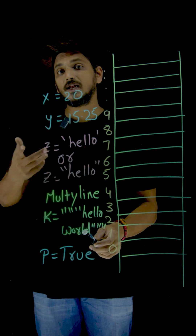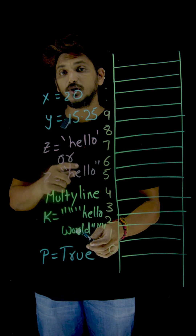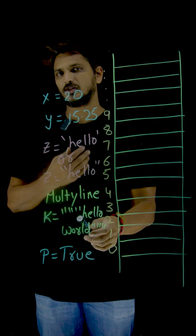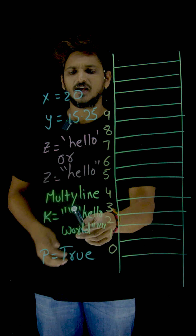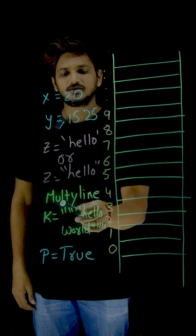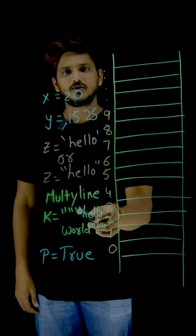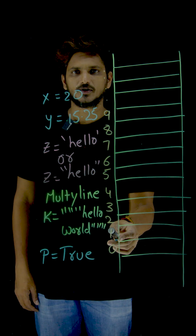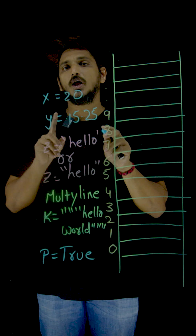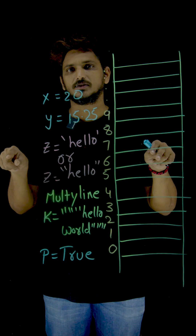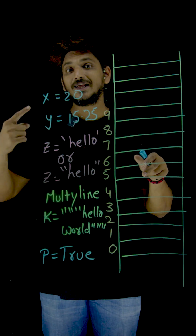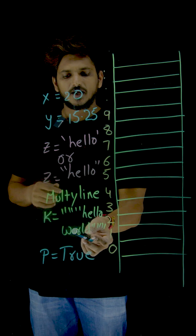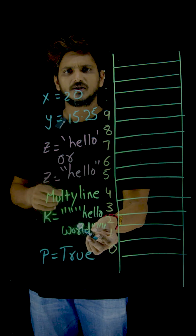If you want to give a multi-line string, then you need to use triple quotations — that means three double quotation marks at the start, then your content like hello world, then three double quotation marks at the end. So for multi-line strings, we follow this approach.